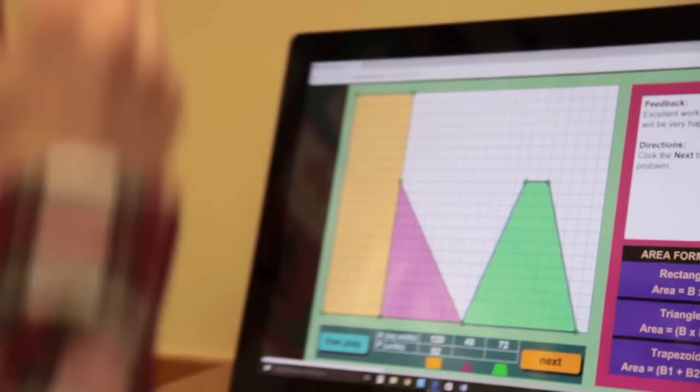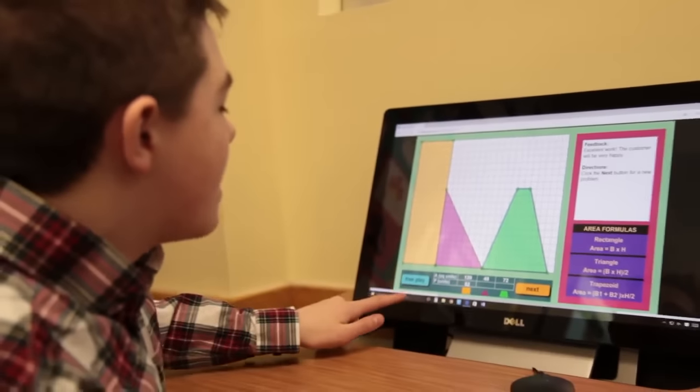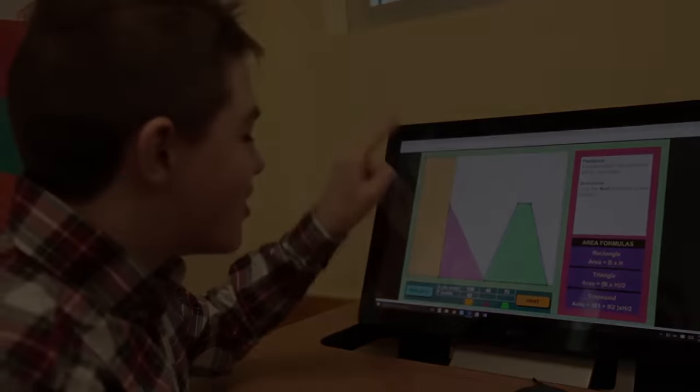And there you have it. The area and perimeter of the rectangle and the areas of the triangle and trapezoid.